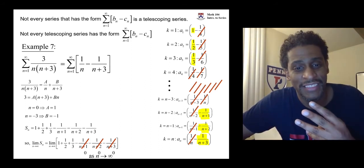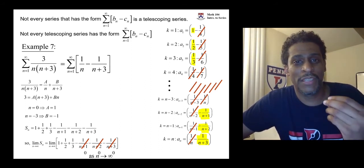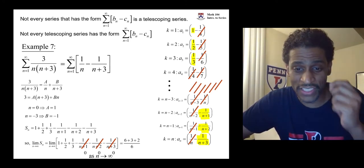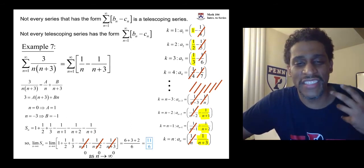And you're left with the three surviving guys in the beginning: one plus a half plus a third. Six sixths plus three sixths and two sixths all together, eleven sixths.